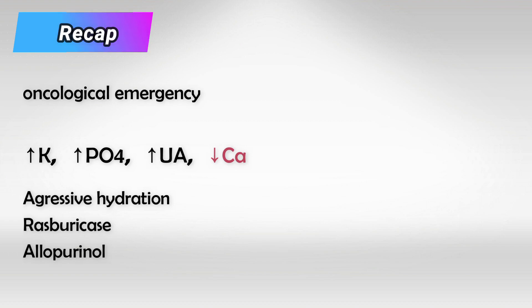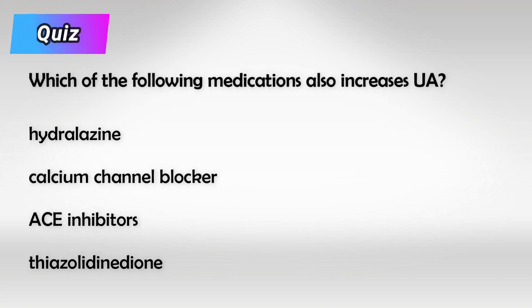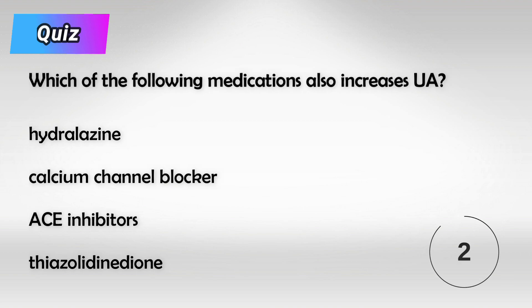Here's a small quiz: which of the following medications can also increase uric acid levels? The answer is thiazide diuretics. That's all I have — thank you so much for watching, and hopefully this helps.